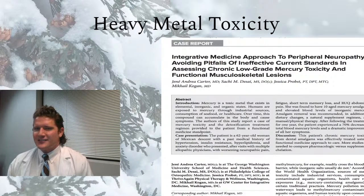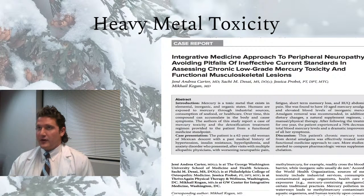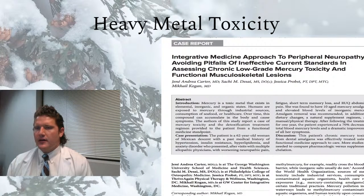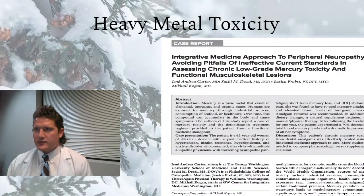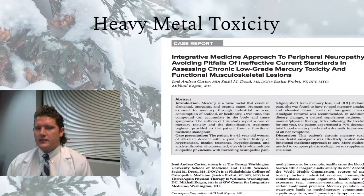Heavy metal toxicity — some alternative practitioners attribute many conditions to it, but it certainly has a time and place and can cause peripheral neuropathy. The big ones to think about are mercury, lead, and arsenic. There are even cases of spouses putting arsenic in a partner's food or drink, which can be fatal and can definitely cause peripheral neuropathy.